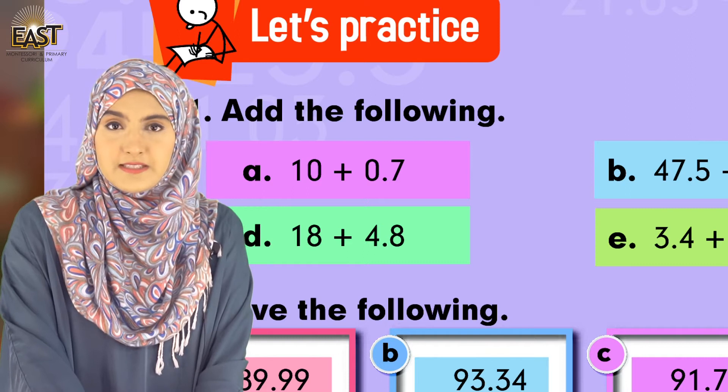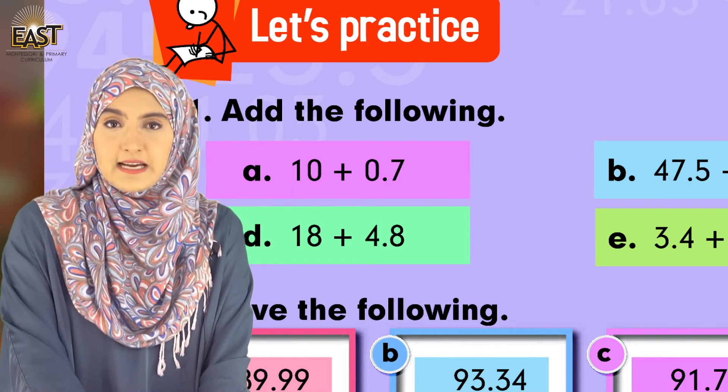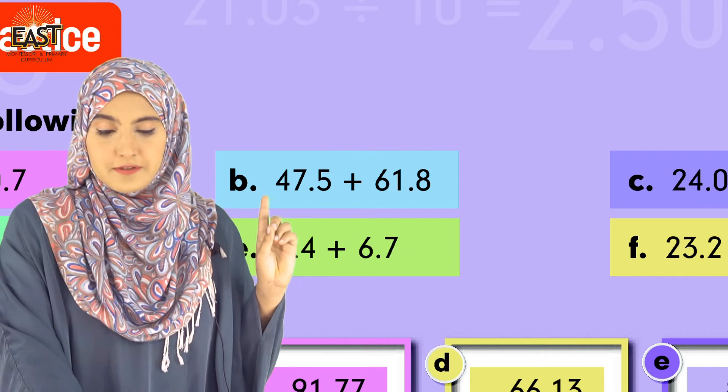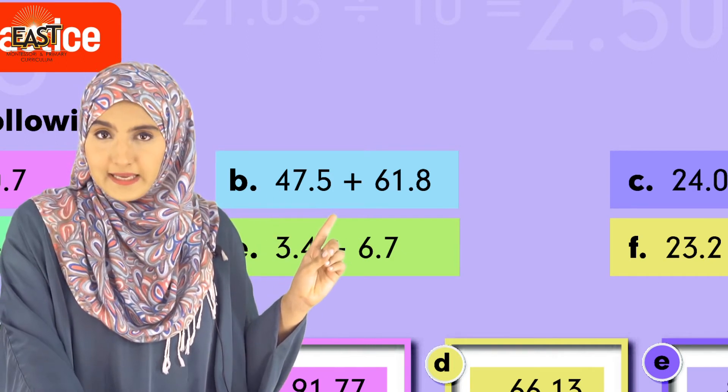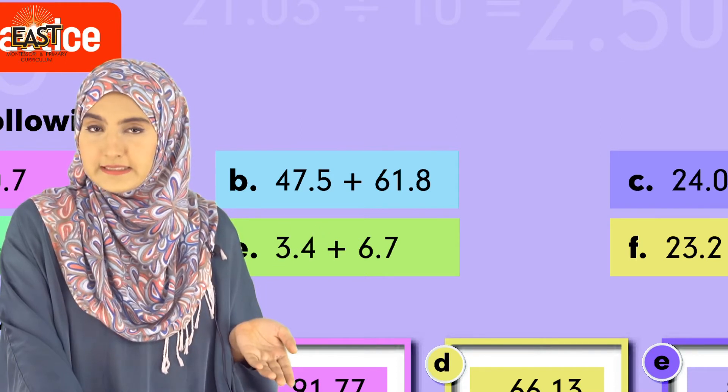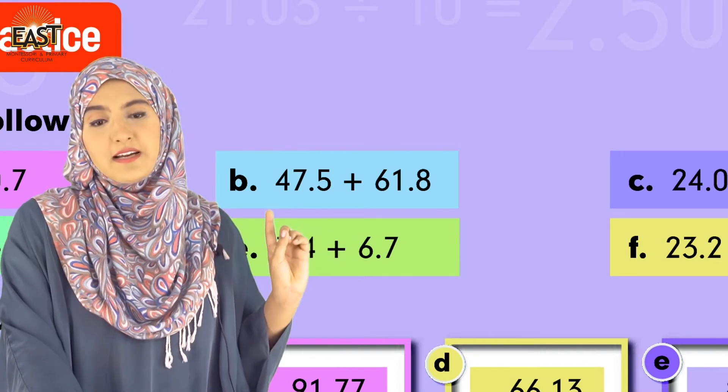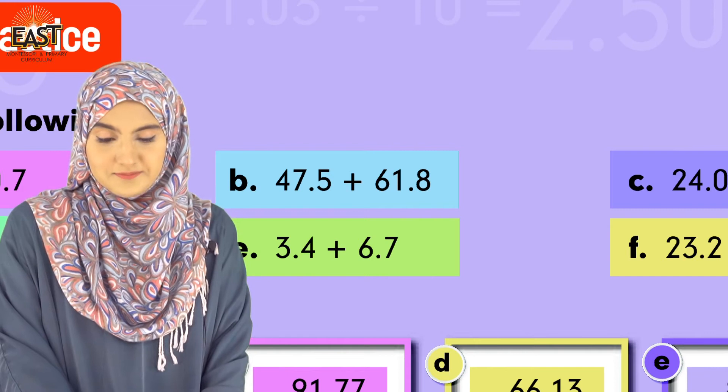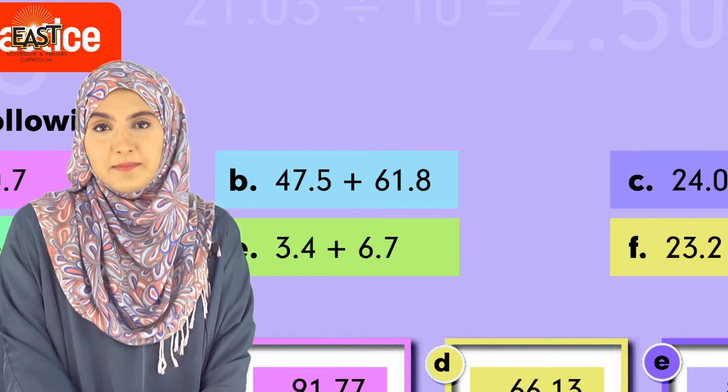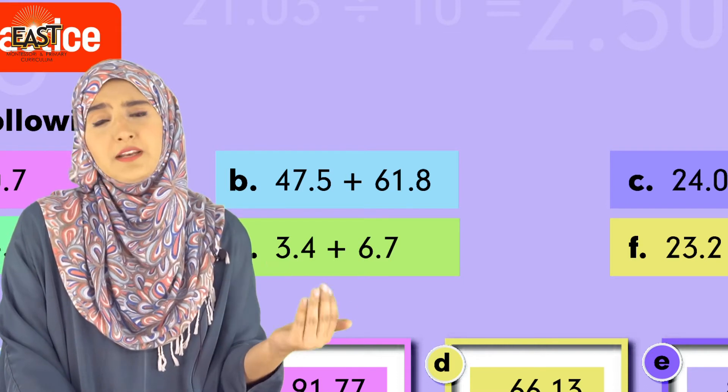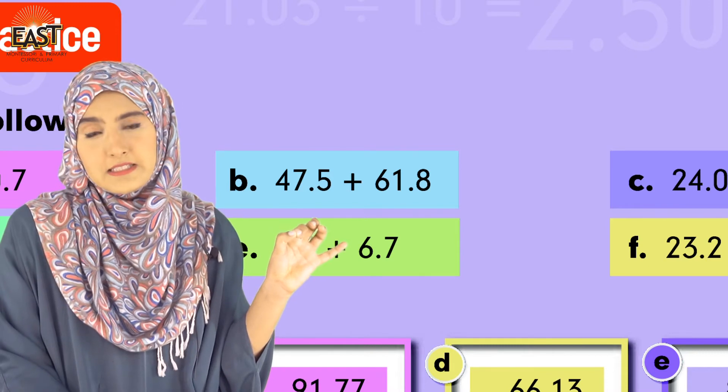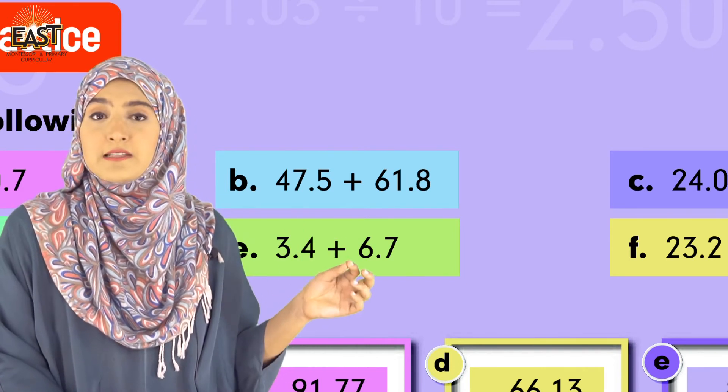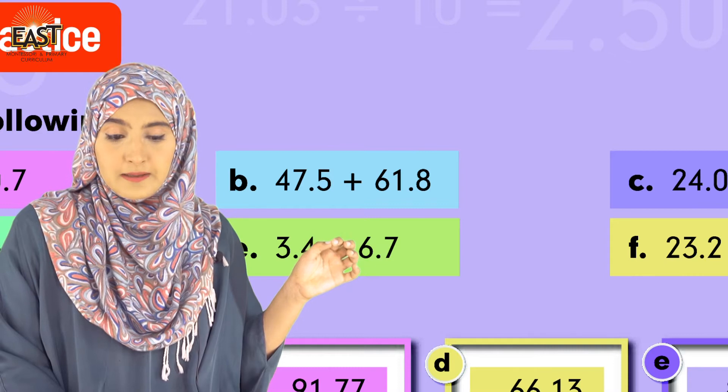The answer is 10.7. In this same way you have to solve the next questions. Part b which is 47.5 plus 61.8. We will add them. The basic rule of addition - we don't look at the pattern, but when we place the decimal in between, looking at the decimal we have to do addition.